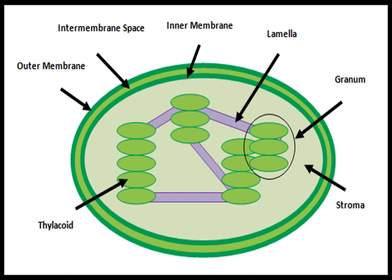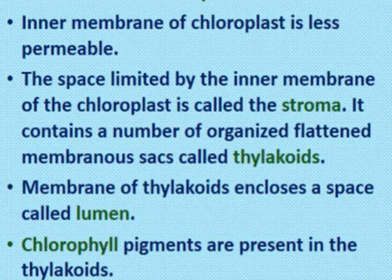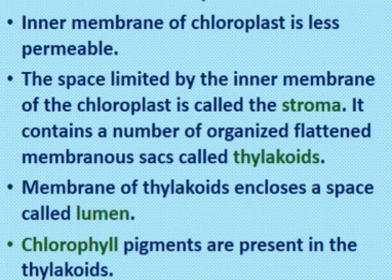Different grana present in the stroma are connected with each other by lamellae, also called stromal lamellae because they are present in the stroma. These stromal lamellae connect two grana with each other. The inner membrane of the chloroplast is less permeable. The space inside the inner membrane, the stroma, contains organized flattened membranous sacs called thylakoids, which are membrane-bounded structures. The space inside the thylakoids is called the lumen.